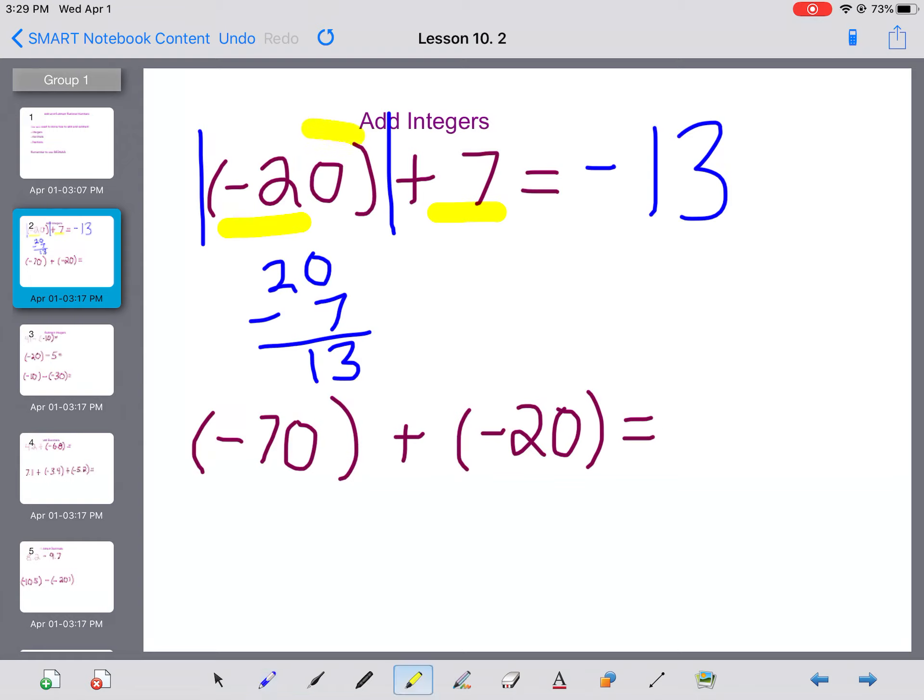If you think about it, that makes sense. If I start with negative 20, I've lost $20 and I find seven back, I still have lost $13 overall. So that's when you have a negative and a positive together, you find the difference. It's a little bit different if you have two negative numbers, it's actually quite simple.